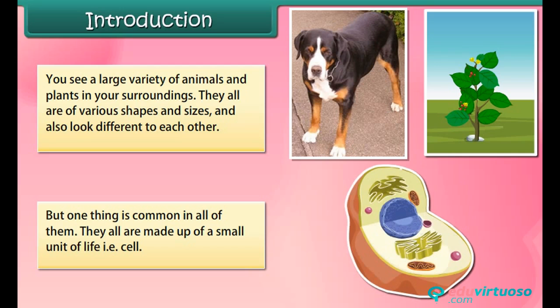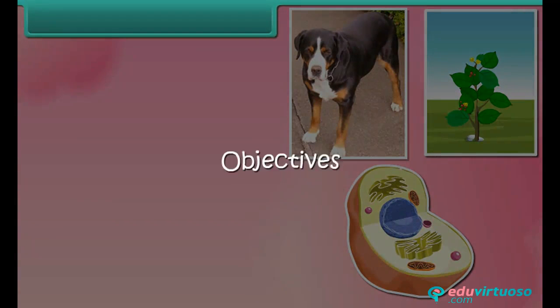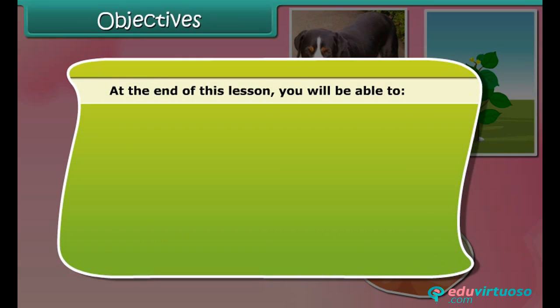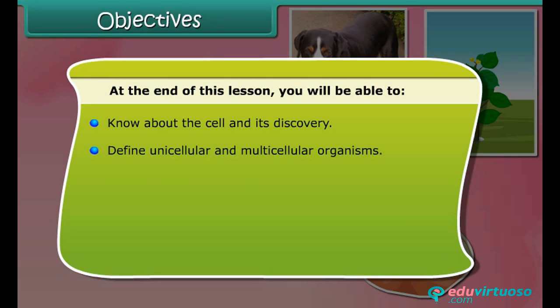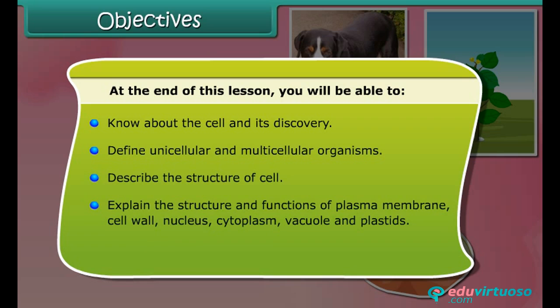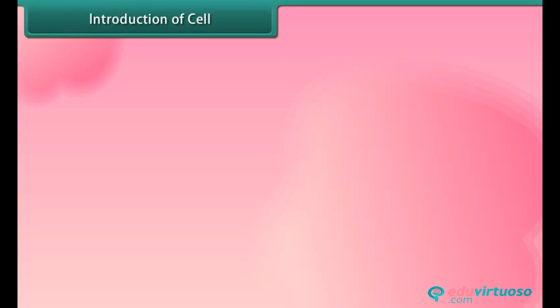At the end of this lesson you will be able to: know about the cell and its discovery; define unicellular and multicellular organisms; describe the structure of cell; explain the structure and functions of cell membrane, cell wall, cytoplasm, nucleus, vacuole, and plastids; and differentiate between the plant and animal cell.